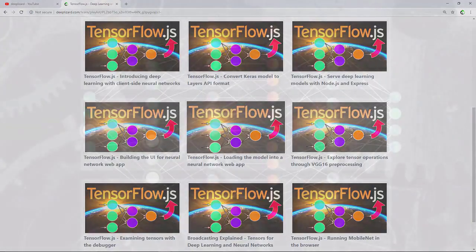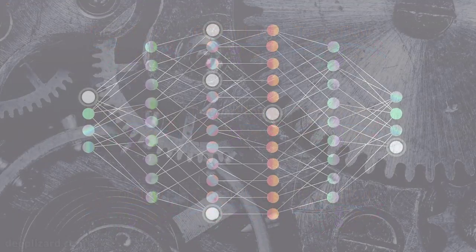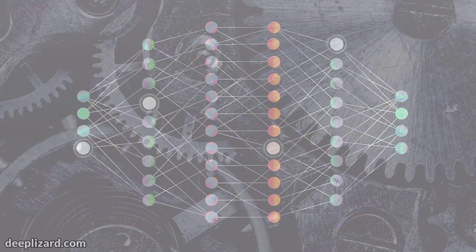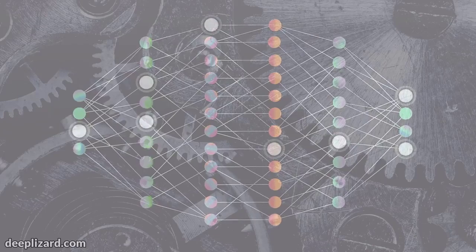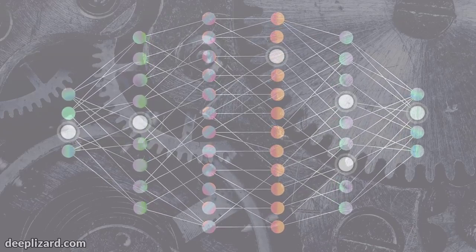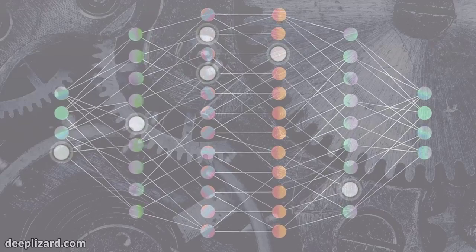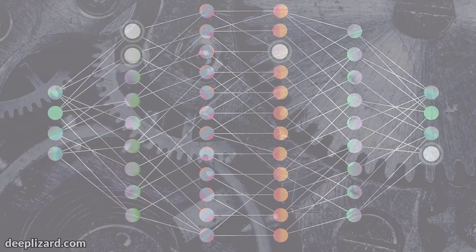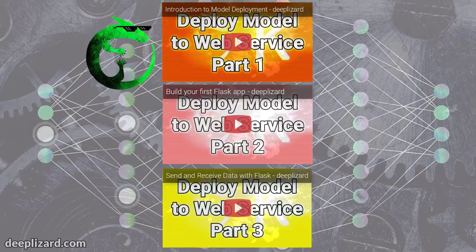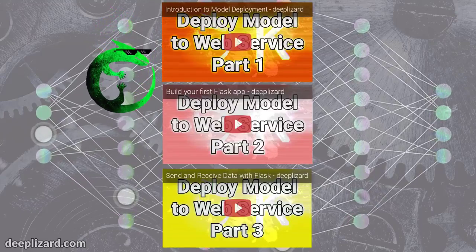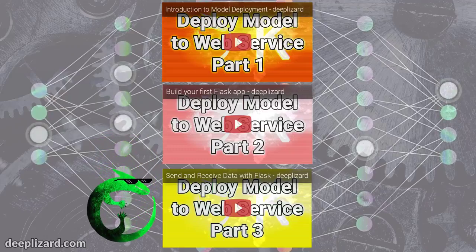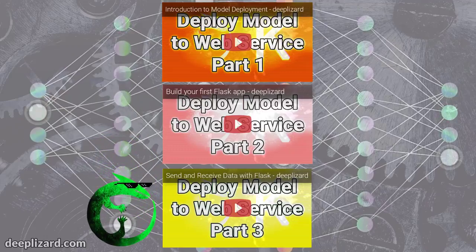So client-side neural networks — running models in the browser? To be able to appreciate the coolness factor of this, we're going to need some context so that we can contrast what we've historically been able to do from a deployment perspective to what we can now do with client-side neural networks. So what are we used to being able to do? As we've seen in our previous series on deploying neural networks, in order to deploy a deep learning application, we need to bring two things together: the model and the data.